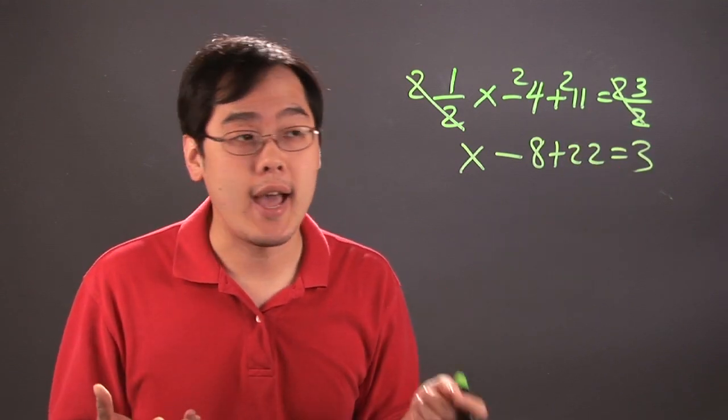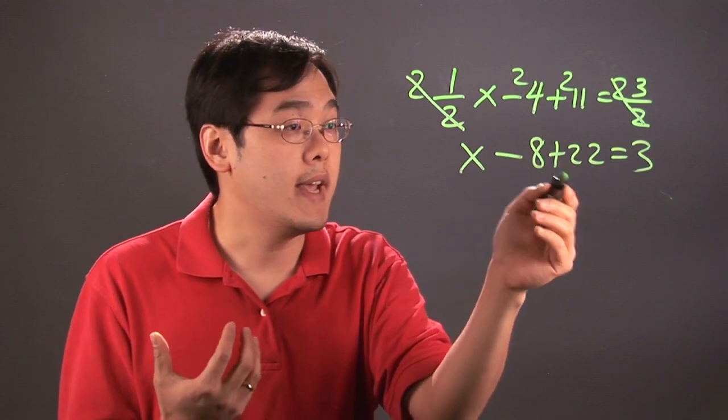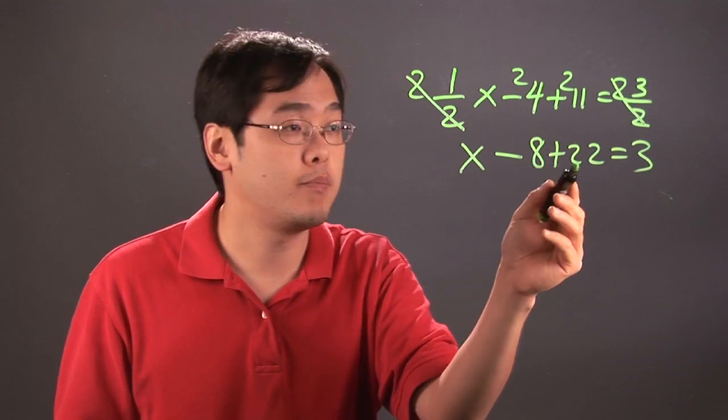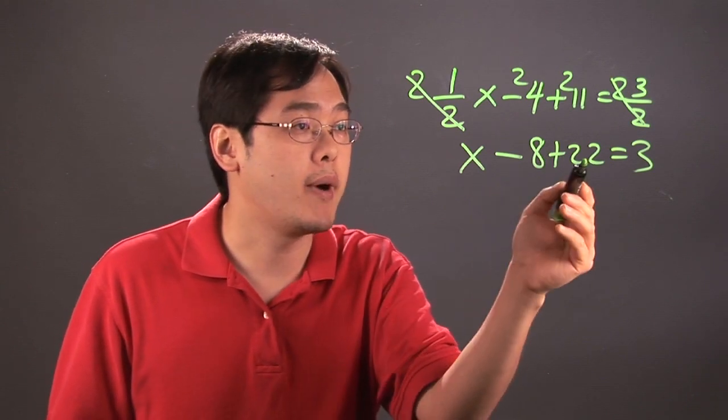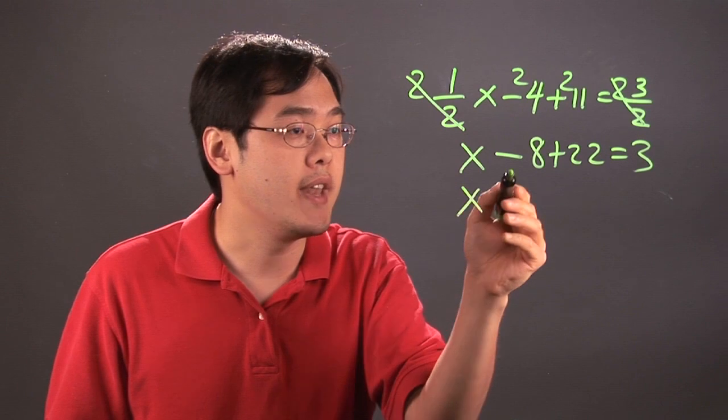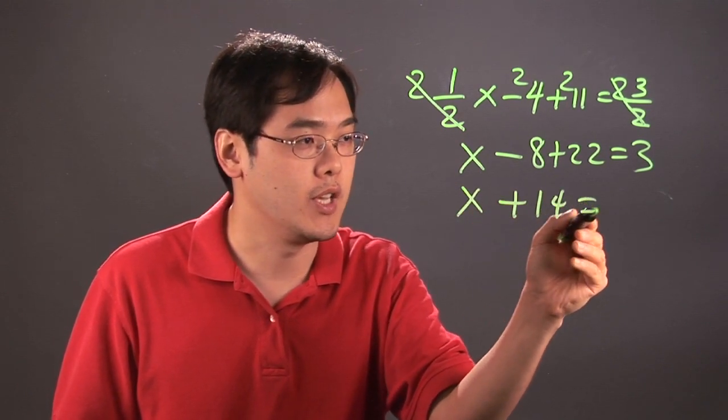Now, what you're going to do after that is, negative 8 and plus 22 are integers. Negative 8 is negative, plus 22 is positive. So what you can do if you like, you can combine like terms. You have negative 8 plus 22 is going to be positive 14, and that's going to equal to 3.